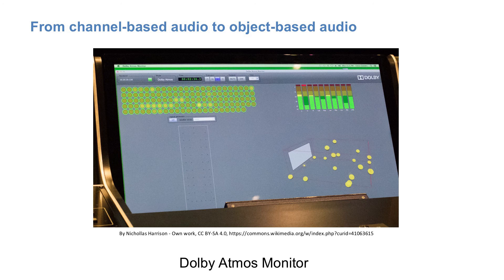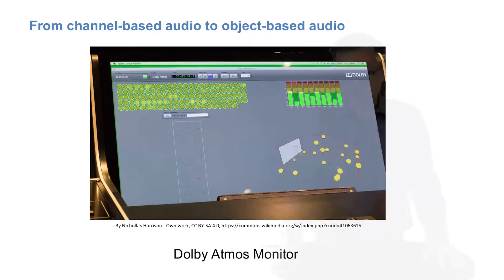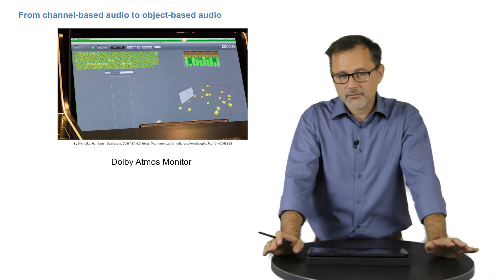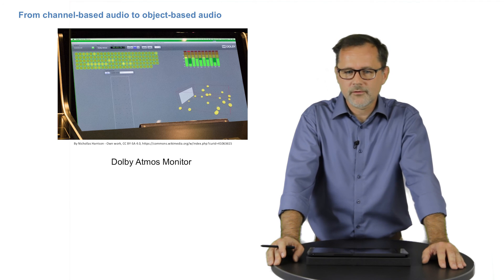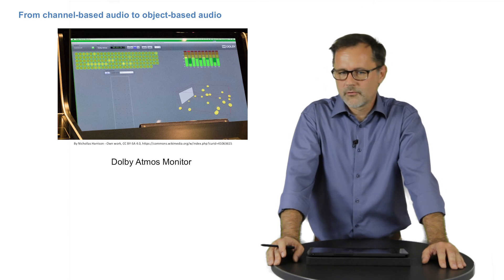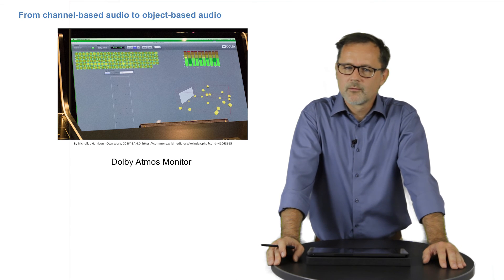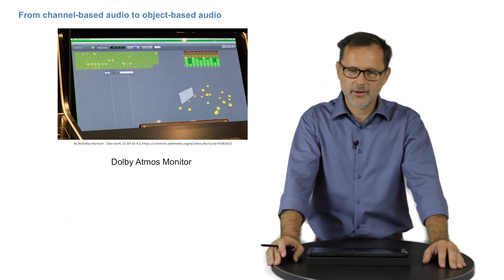It is obvious that the transition from channel-based to object-based audio encoding entails a radical change of production methods, where the production gets partly independent of the loudspeaker configuration, because the signal can be automatically adapted by the rendering software. And thus, the techniques of stereophony and sound field synthesis, which are described in chapter 9 of this series, move somewhat closer together.